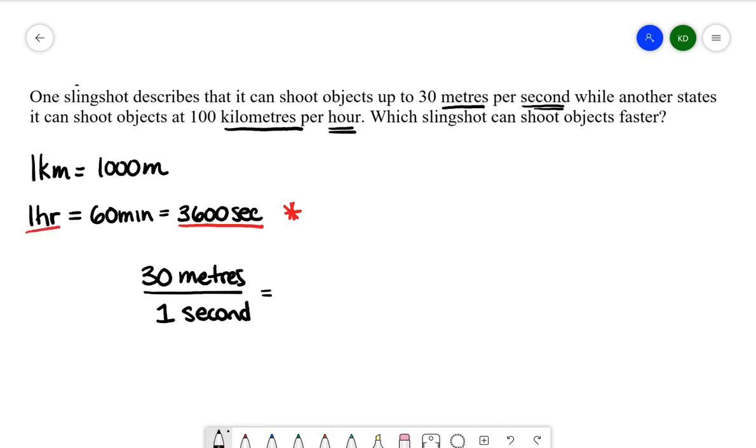When I set up my equivalent fractions, I have 30 meters is going to take me one second. So then how many meters will I travel in 3,600 seconds? And then we can solve for x. Cross multiplying and dividing here, I'm going to multiply 3,600 times 30, and then divide by 1. What you should have is 108,000 meters. We now know how many meters we're going to travel in that amount of time.